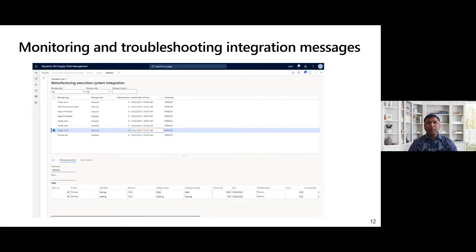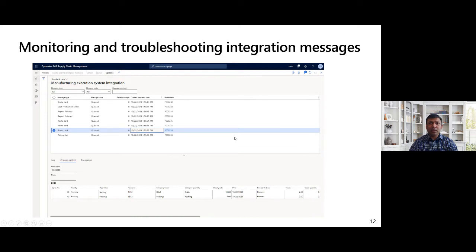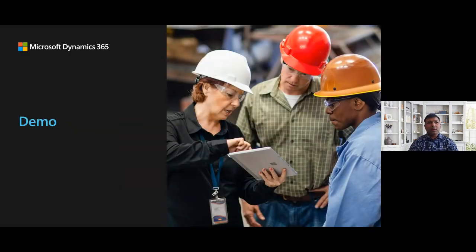Here is a screenshot of the monitoring and troubleshooting page in D365. You can see the message type and messages getting queued. You can select a message and look at the details, then process the message, create the journal and try to post it manually, or do any editing needed to get it posted. That's the monitoring screen we've built to troubleshoot if something is getting stuck. Without further delay, I'll hand over to my colleague Vlad for a quick demo of this new functionality.